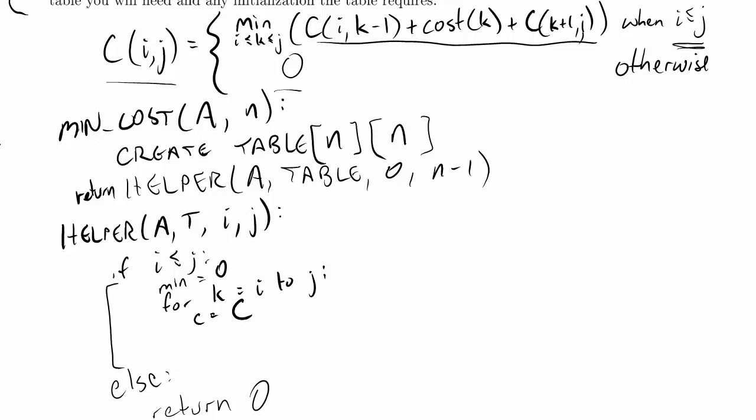So our new cost, I'll call it c. I was about to write c because that was the name of our recurrence up here, but that's not the name of our function. Our function is helper. So c gets helper of a, t, i, k-1, plus the cost of k. What is the cost of k? We're just going to have to assume that the entries in the array are the costs, so array brackets k, plus